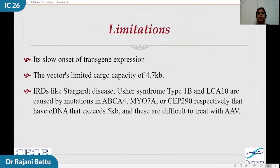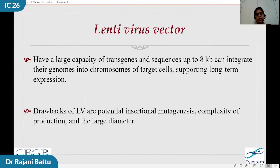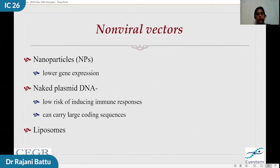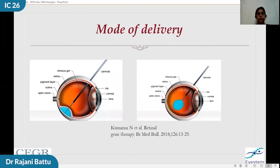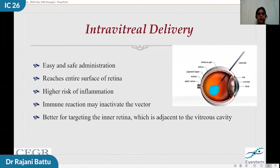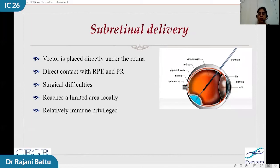Diseases like Stargardt, Usher, and so on, which have a larger gene, are not suitable to be carried by AAV. Lentivirus is an alternative but has its own drawbacks, like a potential mutation at the point of insertion. There are also several non-viral vectors being tried. Different modes of delivery include intravitreal delivery, which is easy and reaches the entire surface, but the effect is limited as it does not reach the RPE and photoreceptors, and immune reactions are higher. With subretinal delivery, although the procedure is more complex, it comes in direct contact with the pigment epithelium and photoreceptors. December 2017 was a landmark time when the US FDA approved gene therapy for RPE65-associated LCA, which causes both LCA and early-onset retinitis pigmentosa.